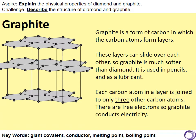If we compare this to graphite, graphite is a form of carbon in which the carbon atoms are arranged in layers. The layers can slide over each other, so graphite is much softer than diamond, and graphite is often used in pencils and as a lubricant. You can see from this diagram that each carbon atom in the layer is joined to only three other carbon atoms, so it only uses three of the four electrons in its outer shell for bonding. This means that there is one free electron per carbon atom, and this electron becomes delocalised and can move through the structure. This means that graphite will conduct electricity, which is incredibly unusual for covalent substances.